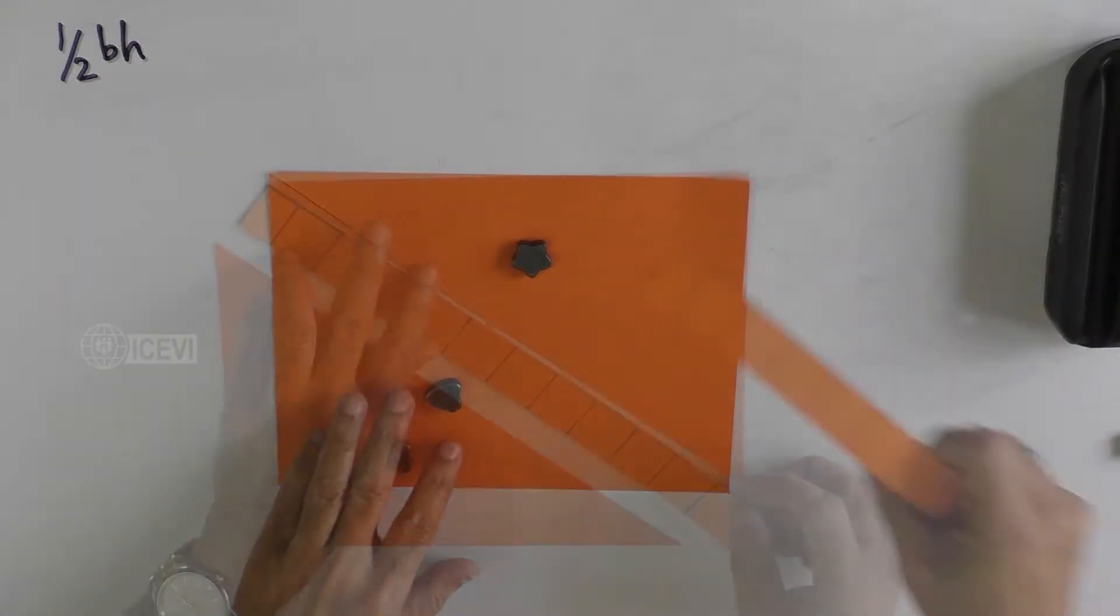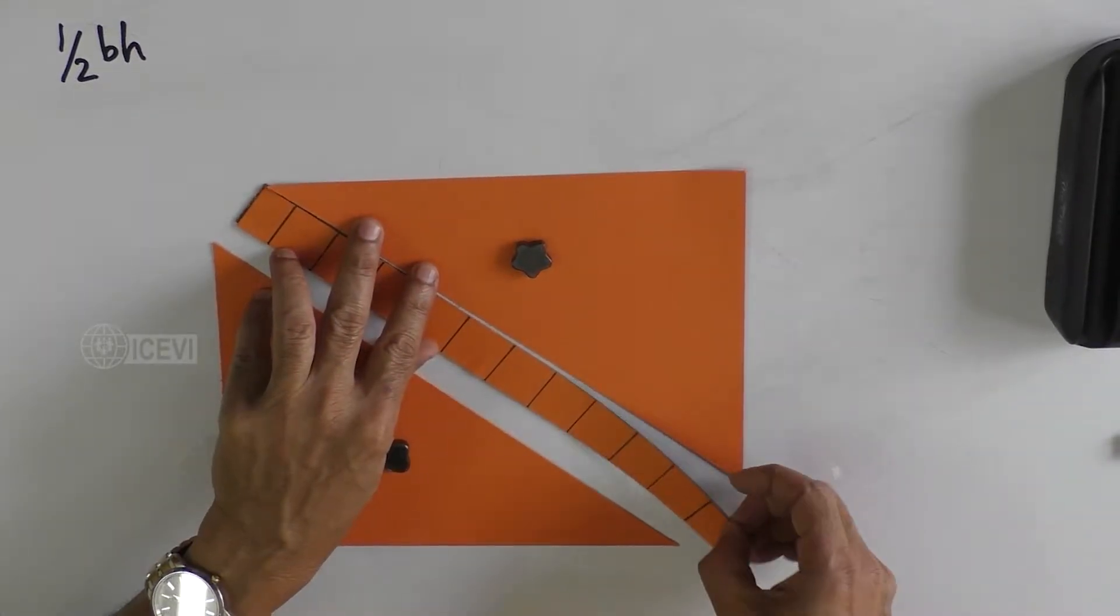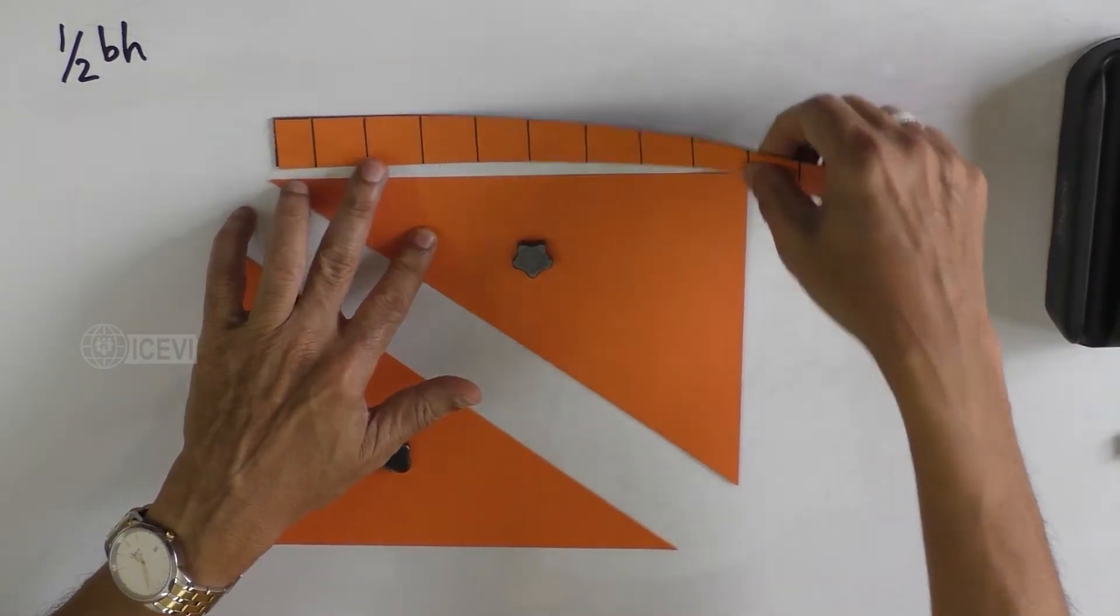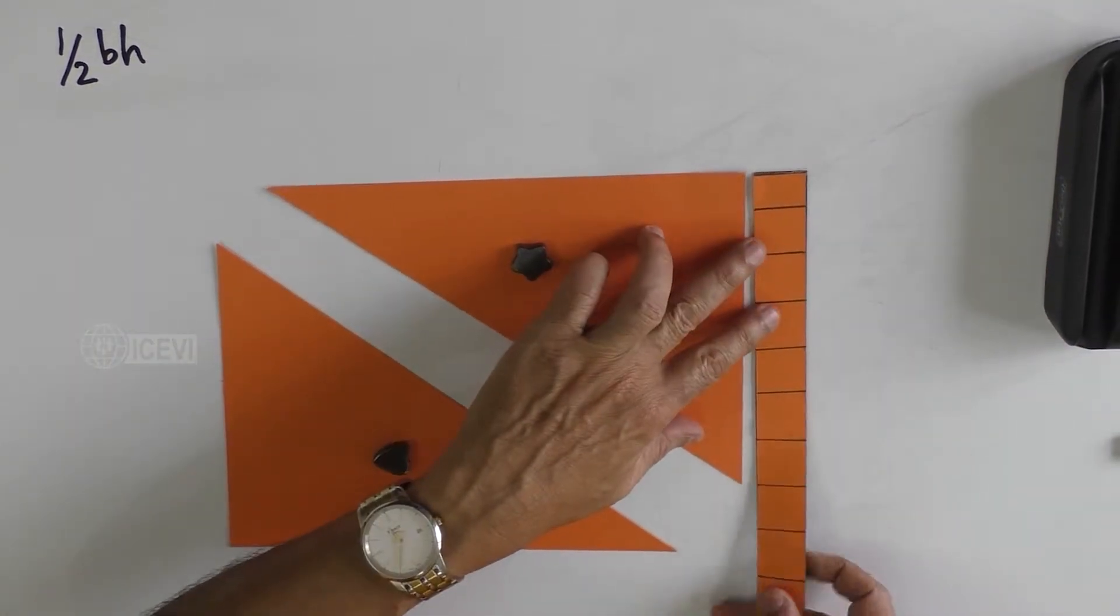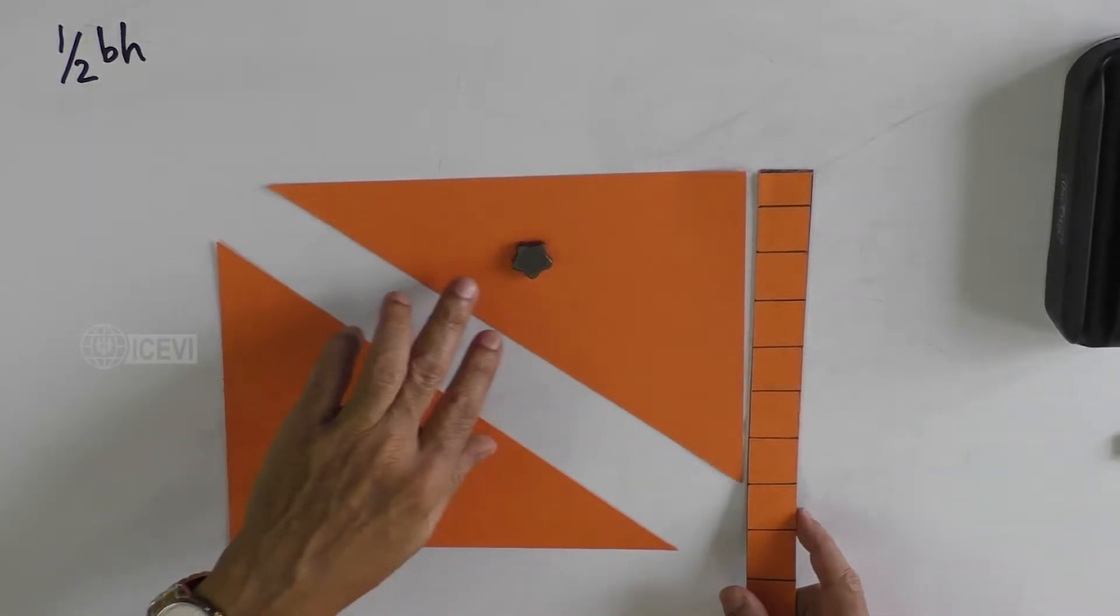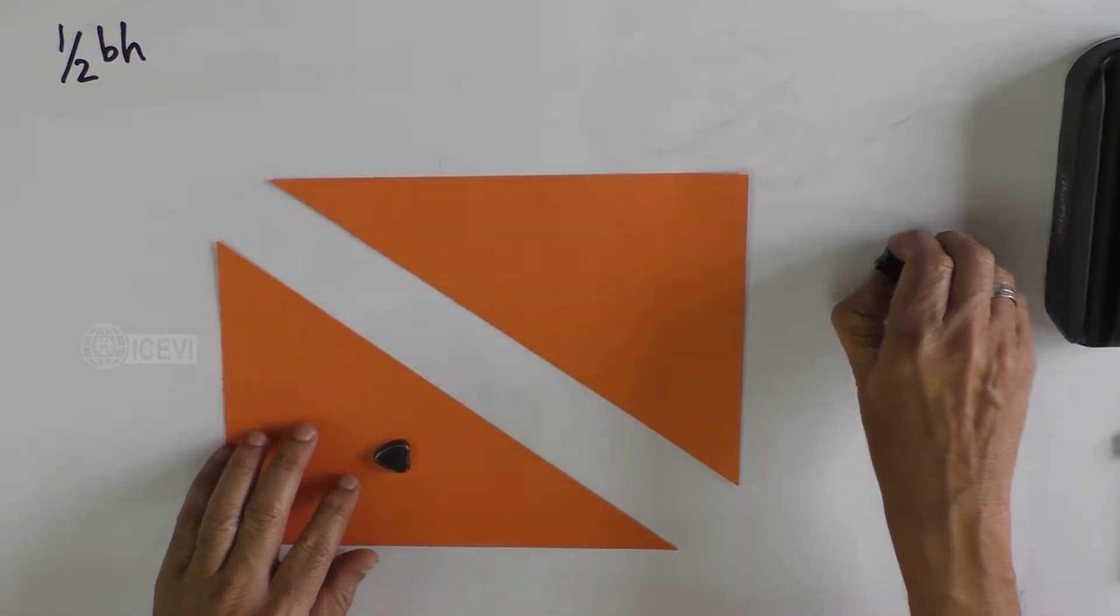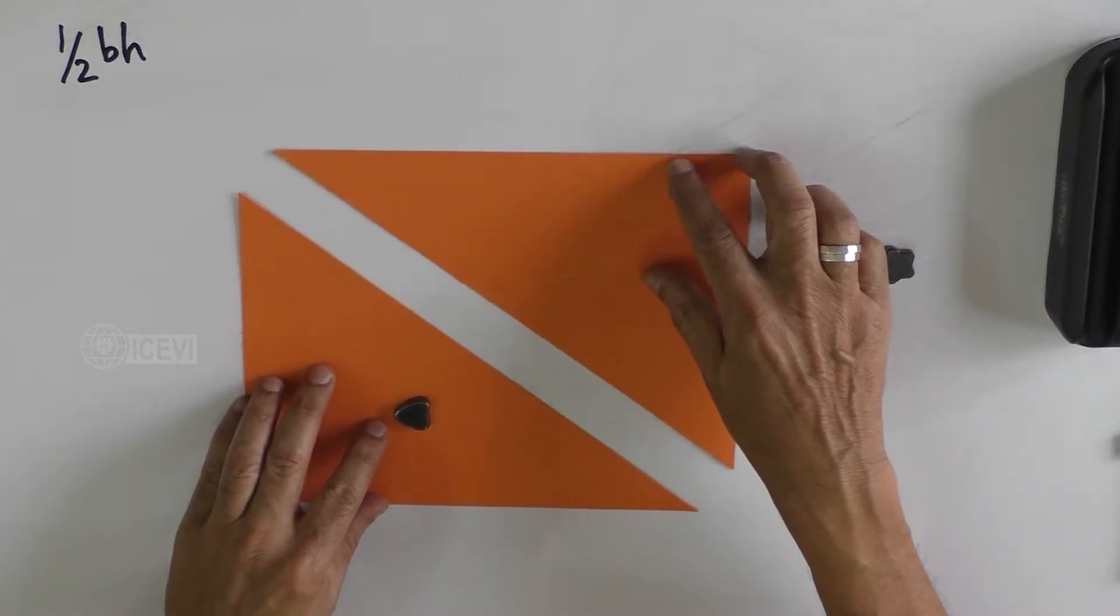Let us measure one side of the triangle and the other side of the triangle and also the third side of the triangle. We can see that all these sides are not equal.